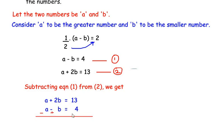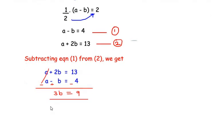Adding these two equations, plus a and minus a cancel out each other. Plus 2b and plus b gives us plus 3b, and 13 minus 4 gives us 9. So we have 3b equals 9.